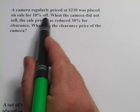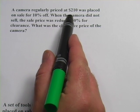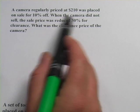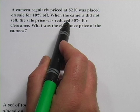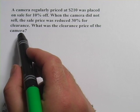This first problem says a camera regularly priced at $210 was placed on sale for 10% off. When the camera did not sell, the sale price was reduced 30% for clearance. What was the clearance price?